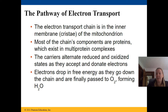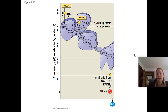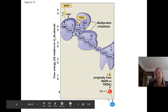Electrons drop free energy as they go down the chain and are finally passed to molecules of oxygen, forming water as a byproduct. Electrons enter, move through, and we get our energy to make water.